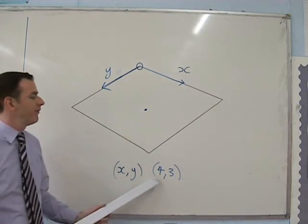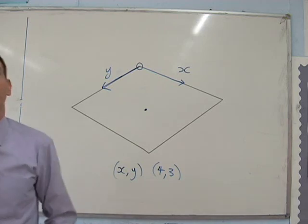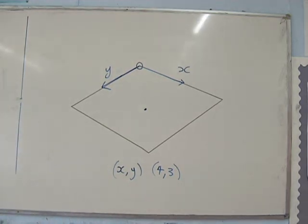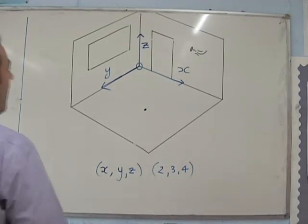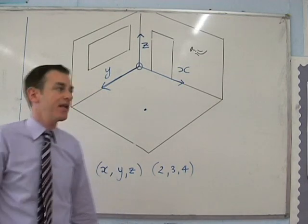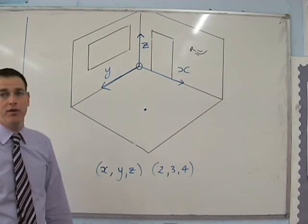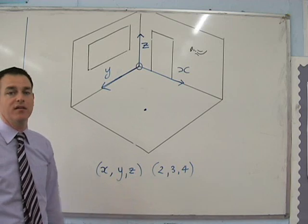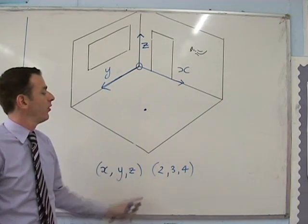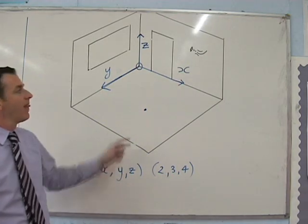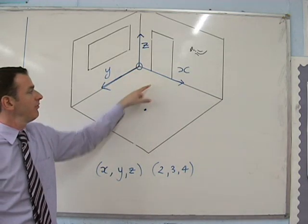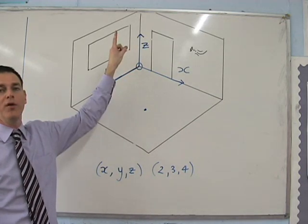This ant is at point (2, 3). If we want to know where a fly is in the classroom, then we need to use three coordinates, x and y and z. This fly is at the point (2, 3, 4). That means it's two along, three across, four upwards towards the ceiling.